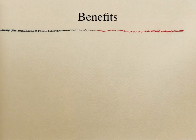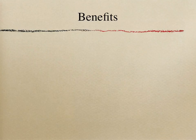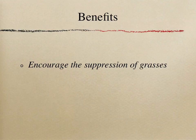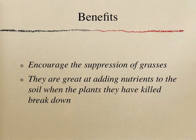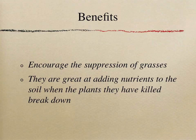Although parasitic plants may seem like they would only be a problem, they do have many benefits. One benefit is that they encourage the suppression of grasses, making it easier for herbaceous flowers to grow in soils. They are also fantastic at improving the nutrient cycle in soils, as they suppress large groups of grasses that would otherwise consume large amounts of essential soil nutrients. Nutrients are also added through the breakdown of dead plant matter killed off by the parasitic plant.